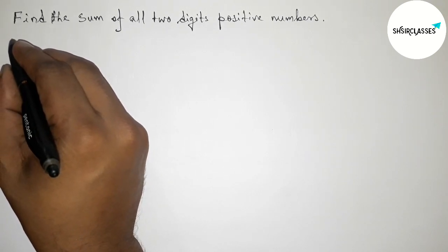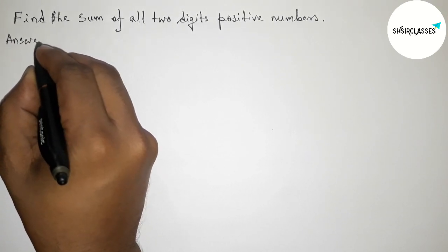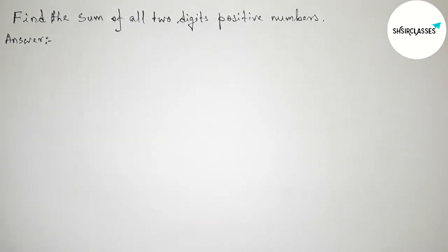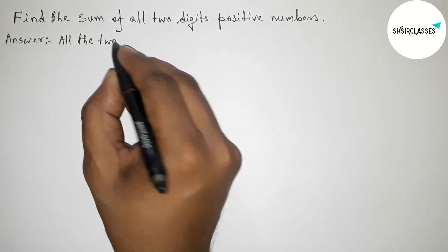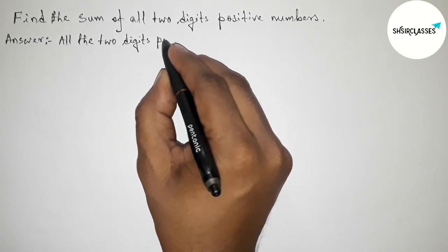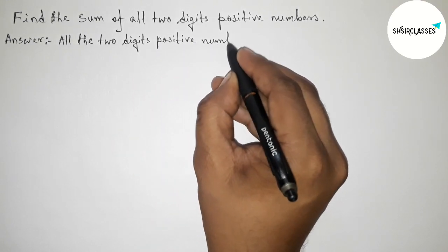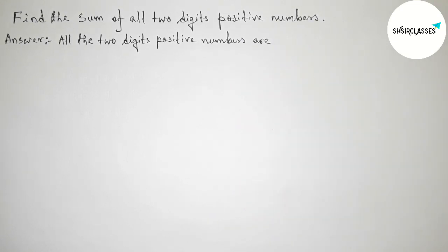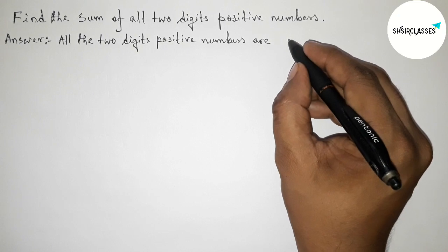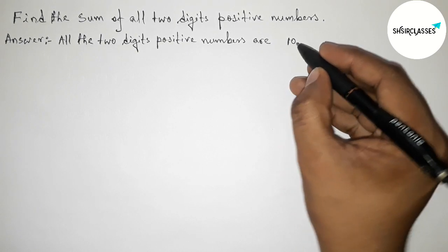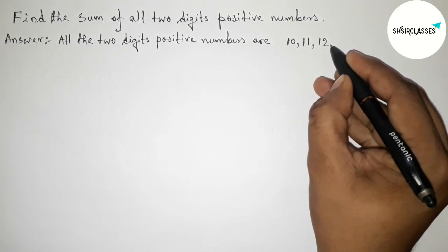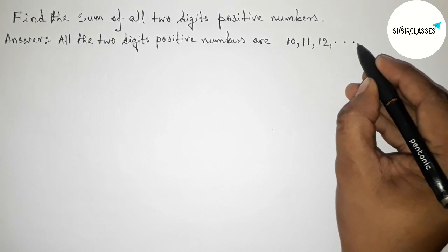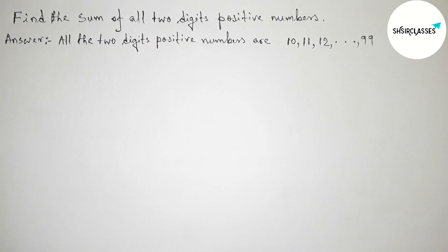First of all, let us solve this problem. We have to write down all the two-digit positive numbers. The first two-digit positive number is 10, then 11, then 12, and continuing — the last one will be 99. So these are all the two-digit positive numbers.